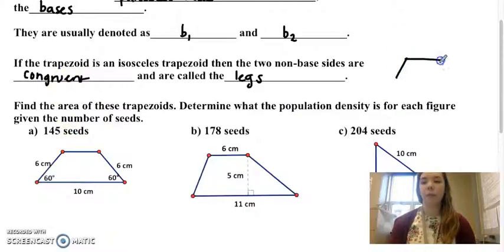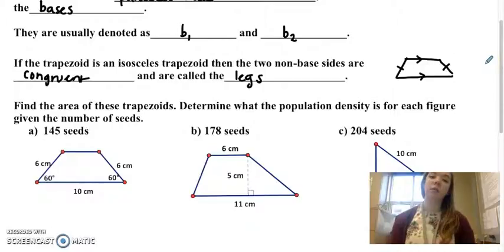So we do a quick sketch here. These are your parallel sides, so they're the bases. And if these two are the same measure, that's what makes it an isosceles trapezoid. Otherwise, it's just a regular trapezoid.